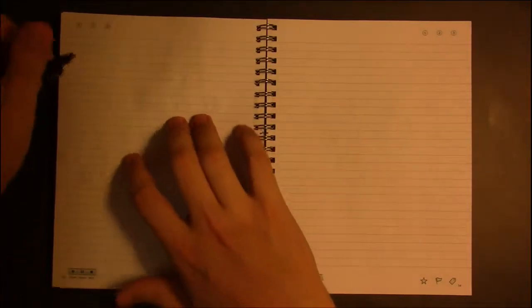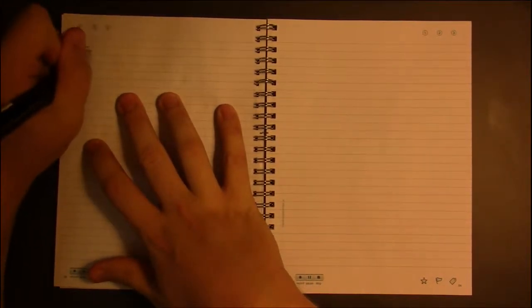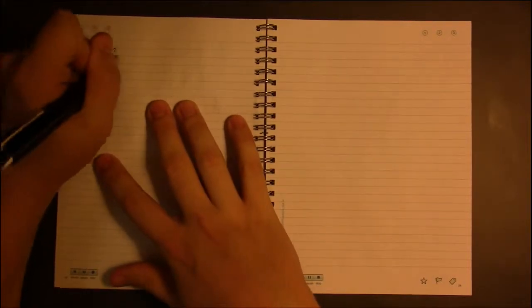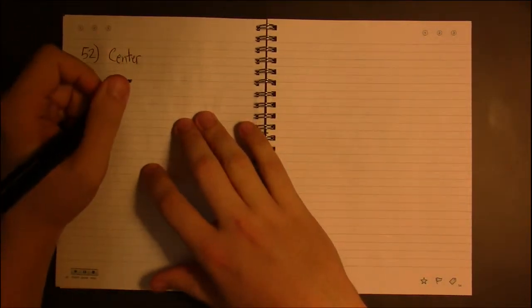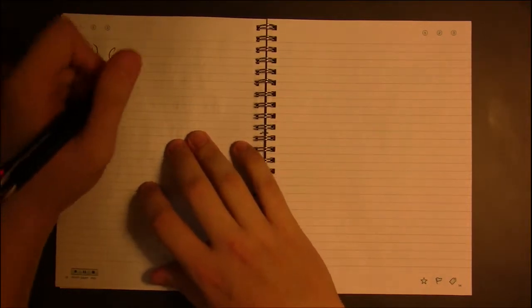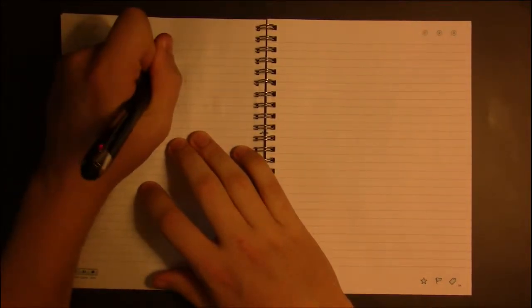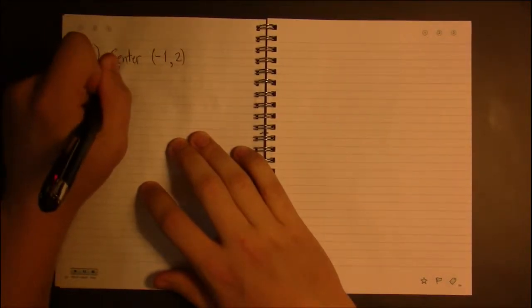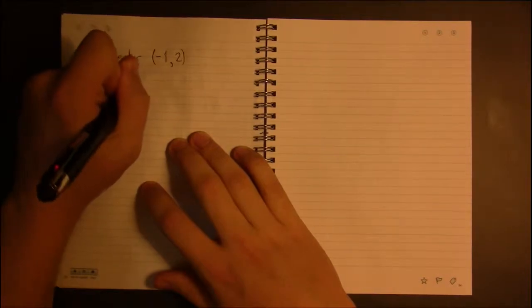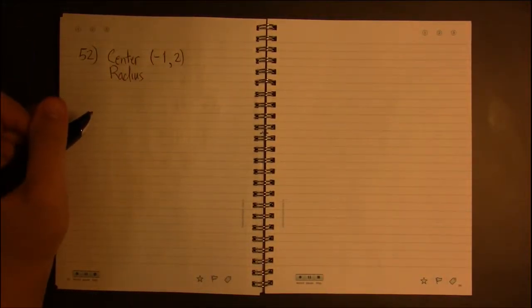So if we take a look at a real quick example, say number 52 on page 63, and we're supposed to write the equation of the circle with center minus one two and radius being two.